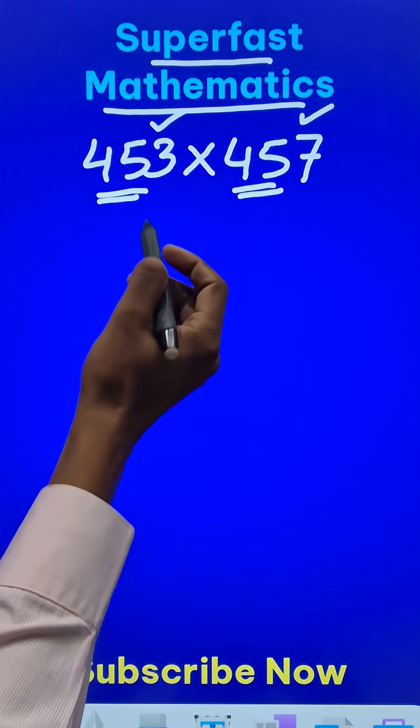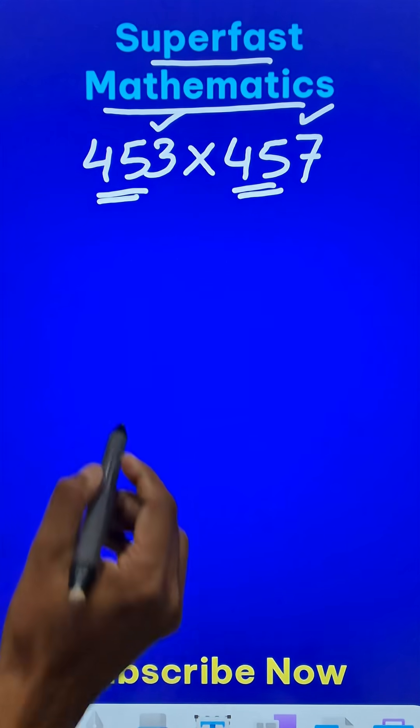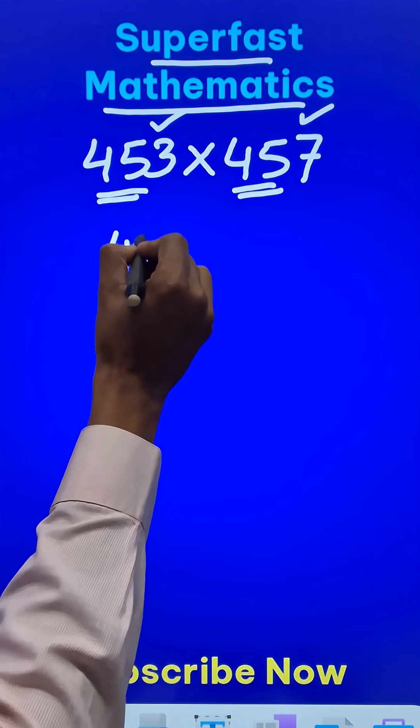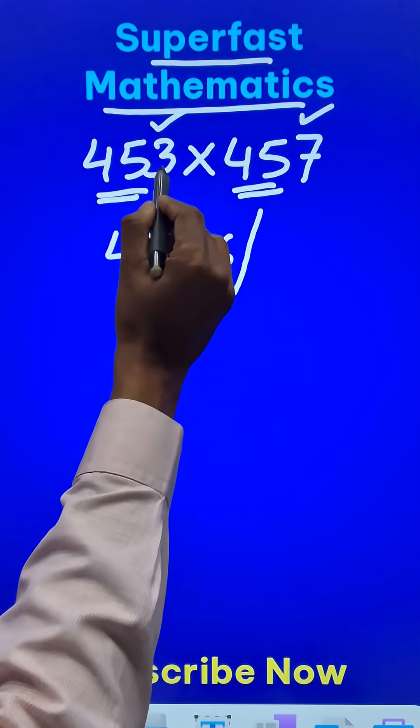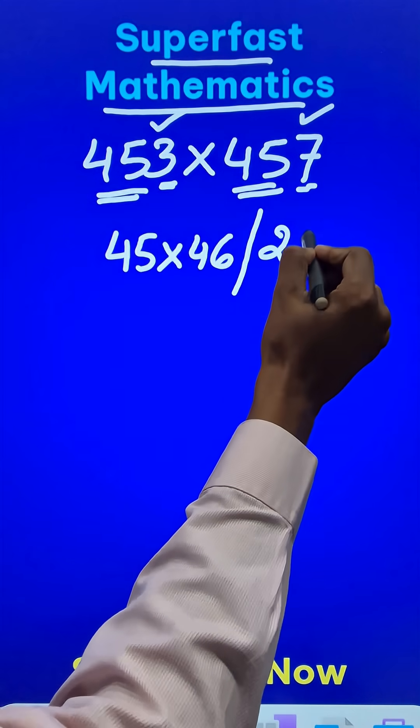So whenever this property holds good, the multiplication can be done really quickly. Take 45, multiply it by its consecutive number 46, and then suffix the product of 3 and 7, that is 21, to the result.